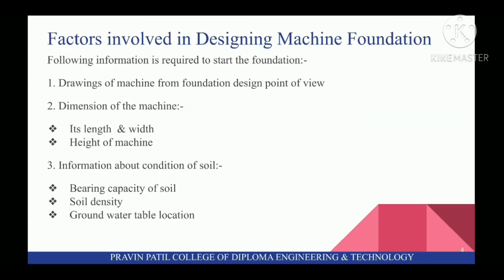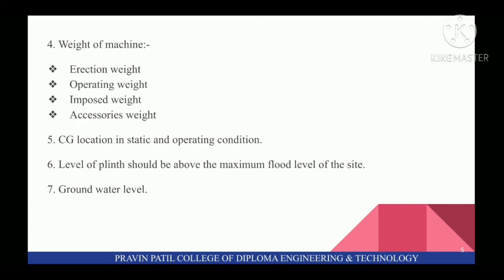Next topic is Factors Involved in Designing Machine Foundation. The following information is required to start the foundation. First is Drawings of Machine from Foundation Design Point of View. Second is Dimension of the Machine, i.e. its Length and Width. Next is Height of Machine. Third is Information about Condition of Site, i.e. Bearing Capacity of Soil, Soil Density and Ground Water Table Location. Next factor is Weight of Machine, i.e. Erection Weight, Operating Weight, Imposed Weight, Accessories Weight. Fifth is CG Location in Static and Operating Condition.